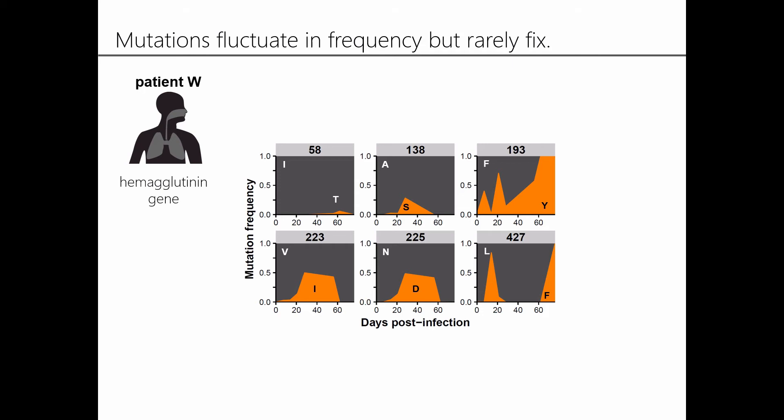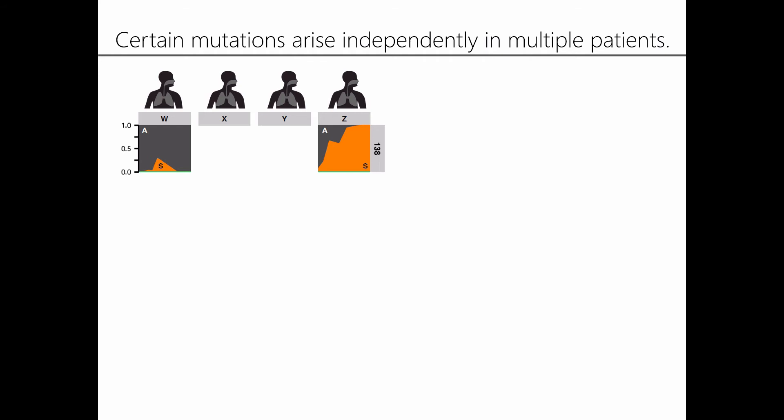We had access to viral samples collected approximately every one to two weeks during the course of these infections, and by deep sequencing all of these viral samples we could actually measure evolution over time within these patients. Here's a small snapshot of our results — I'm showing you six of the non-synonymous mutations we identified within a single patient, all within one gene: hemagglutinin, the main antigenic determinant of influenza. You can see right off the bat that there's a substantial amount of evolution within this one patient: a good number of non-synonymous mutations arising, reaching high frequencies, and sometimes even fixing during the course of this infection.